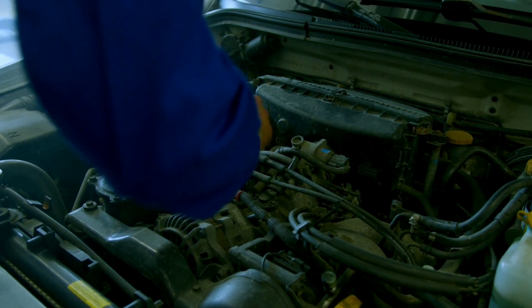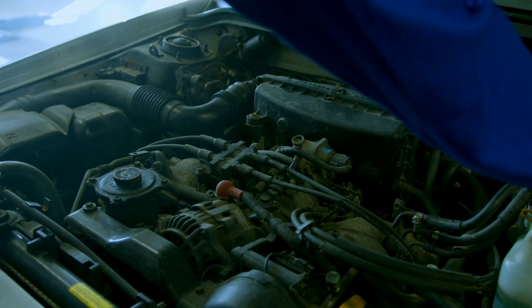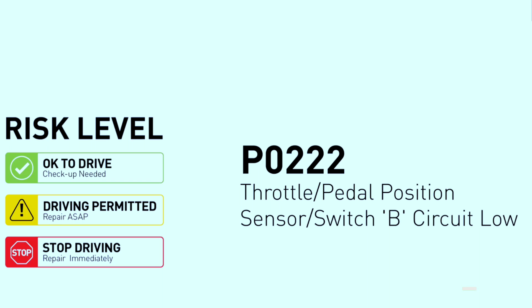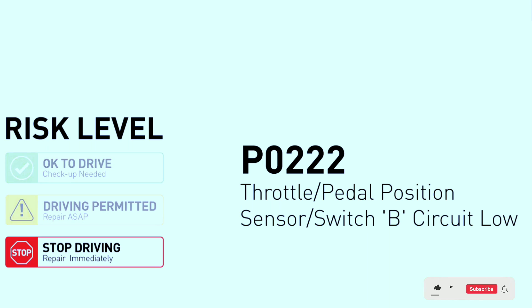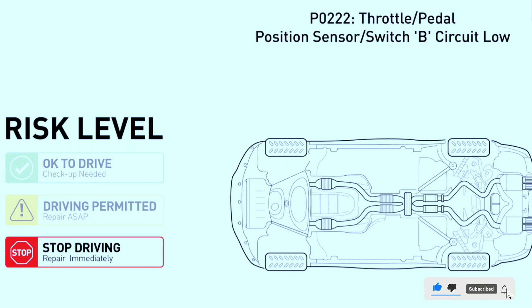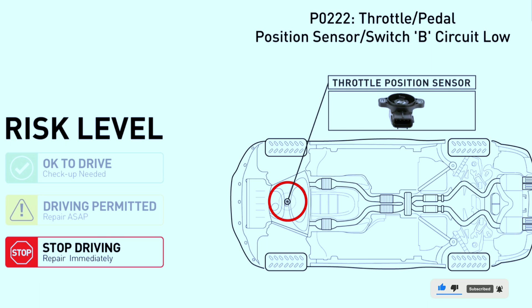Before we get started, let's briefly understand what the P0222 code means. This code is triggered when the engine control module (ECM) detects a low voltage input from the throttle or pedal position sensor or switch B-circuit. This sensor is crucial for the proper functioning of your throttle system.